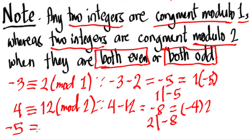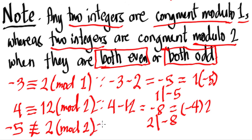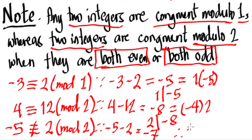If they're not both even or both odd, they are incongruent. For example, negative 5 is incongruent to 2 mod 2 because negative 5 minus 2 equals negative 7, and since 7 is a prime number, 2 does not divide negative 7 — it's not a factor of negative 7.